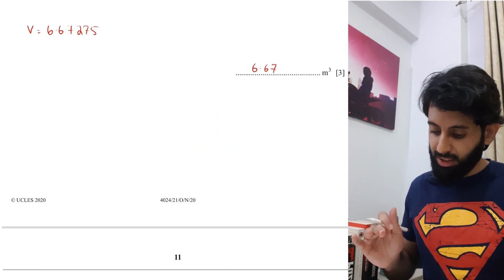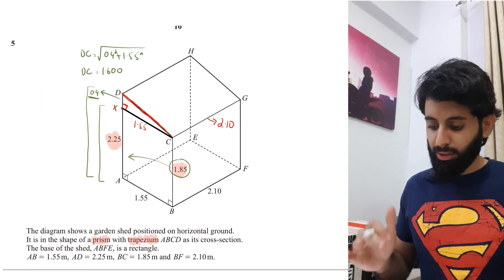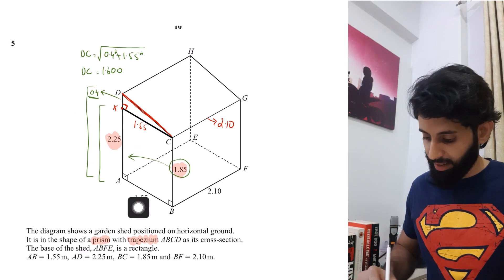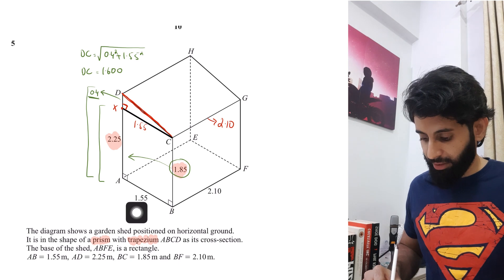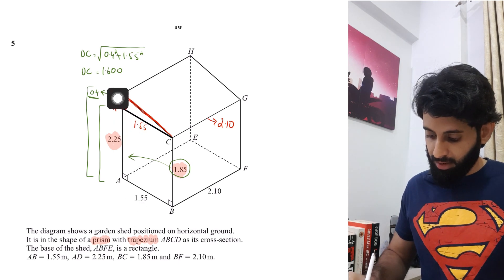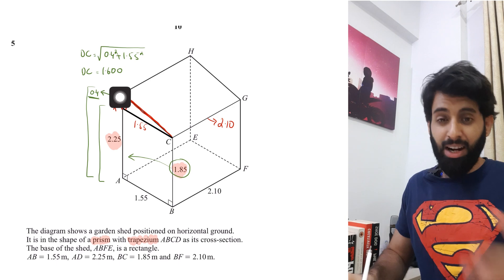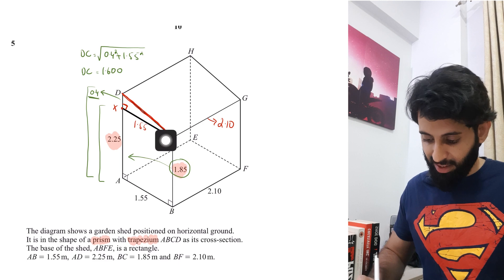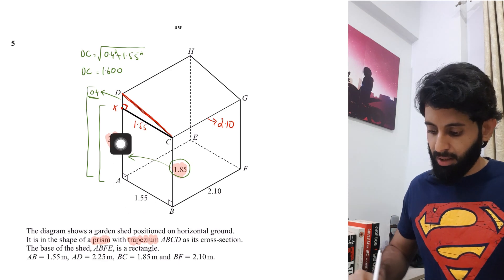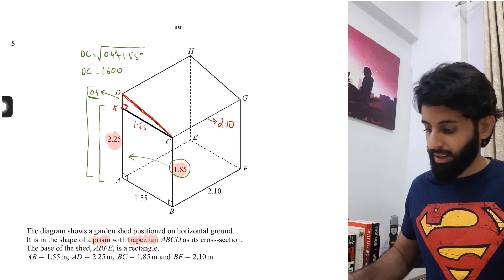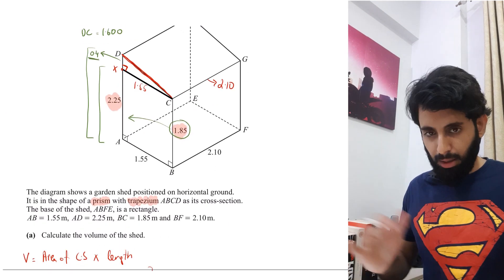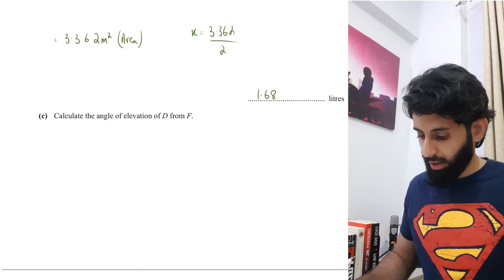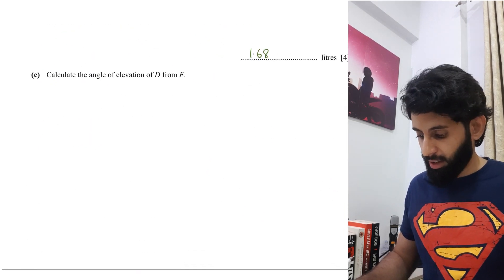A common error students make in this type of question is taking DC = 1.55, forgetting that ABCD is a trapezium, not a rectangle. Had it been a rectangle that would be correct, but since it's a trapezium, DC is slightly slanted — angle XDC is not 90 degrees. Just watch out for that.